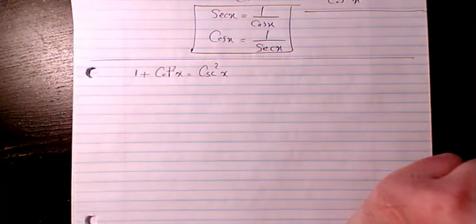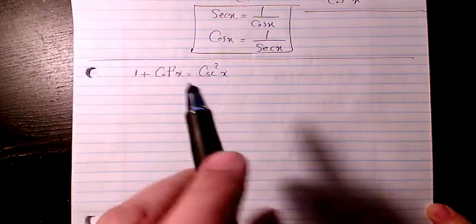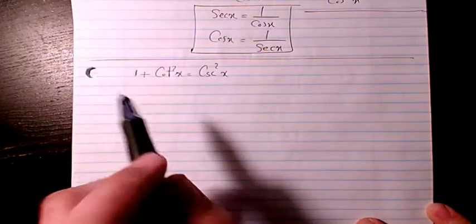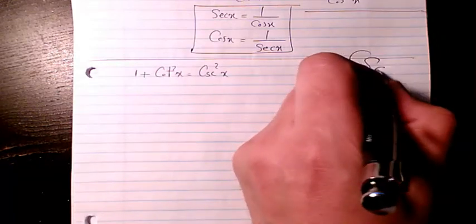In this video I want to show you how to solve this tricky identity. We have 1 plus cotangent squared x equals cosecant squared x. As you know, cosecant is sometimes written like CSC, or